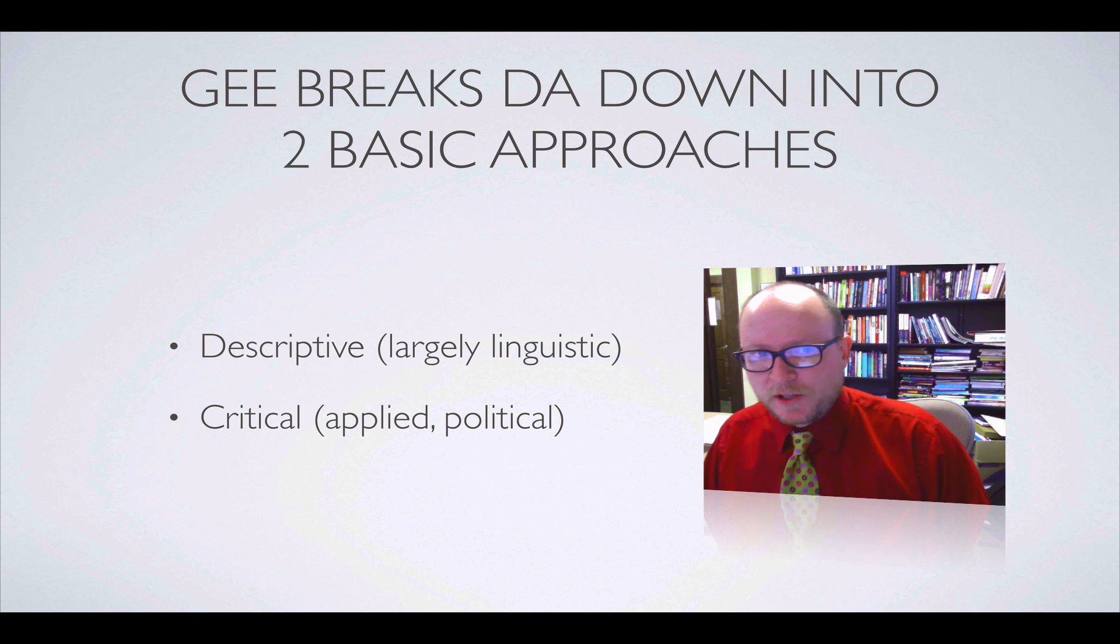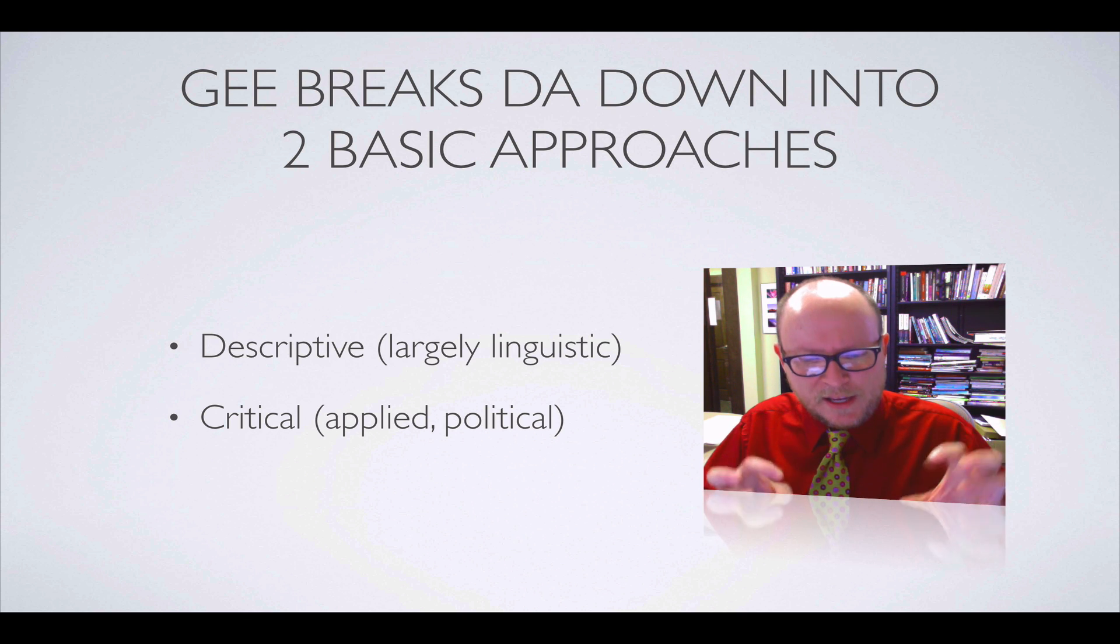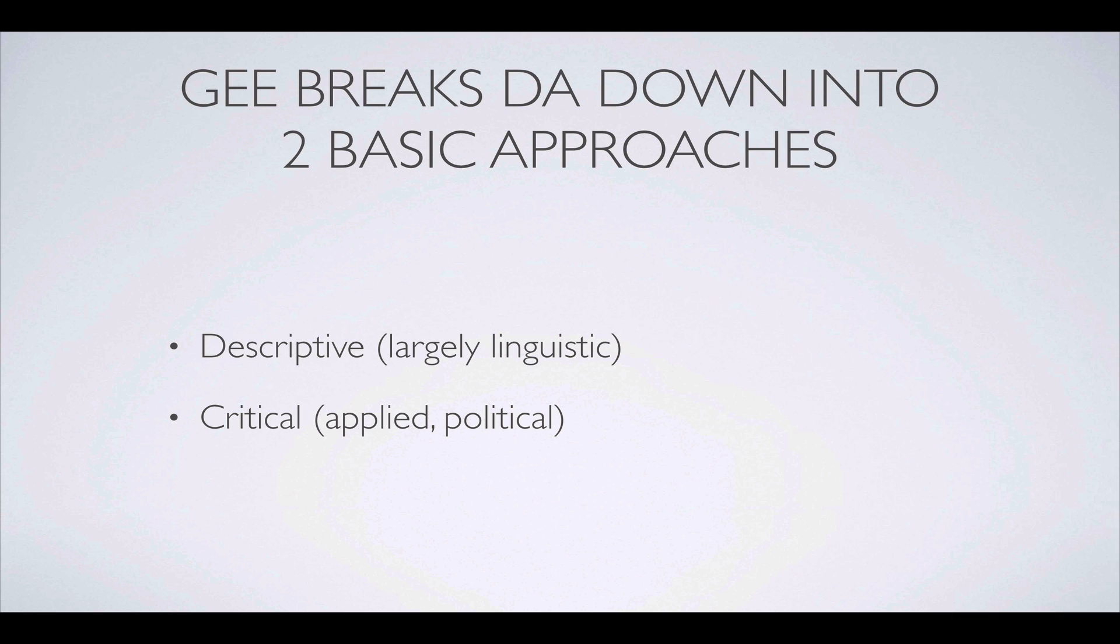So Jim Gee, in his book, An Introduction to Discourse Analysis, breaks down discourse analysis into two basic approaches, one which would be basically purely descriptive, largely linguistic. So looking at the actual language details and how languages and their grammars work together to kind of cohere and make things that people say meaningful in a broad sense. And the second basic approach would then be critical. So more applied understandings of that linguistic information and with a particularly political bent. So understanding how power flows and operates within society using language.